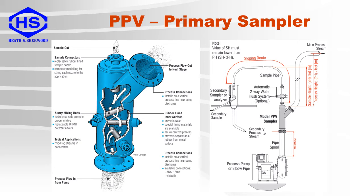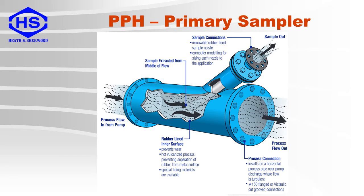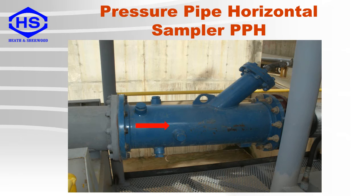It should be stressed that for this system to provide a sample, the maximum height of the sample piping must be less than the maximum height of the process piping. A version of the PPV without mixing rods is also available. This version of the pressure sampler is designed for horizontal installations, where the process inlet and outlet are on the same plane whereas the sample goes off at an angle. Here is an installation example of a horizontal pressure pipe sampler with mixing bars.